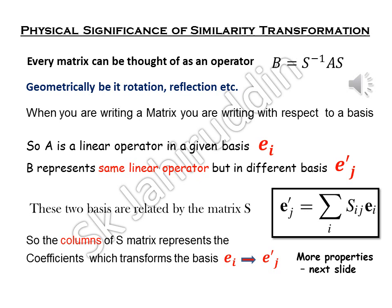It transforms something to something. So A is a linear operator in a given basis, say e_i. Very important thing is, which you may not know till today, that B represents the same linear operator but in a different basis. So your A and B represents the same operation, but in a different basis.